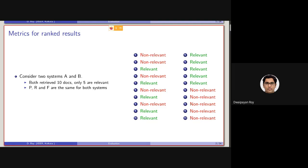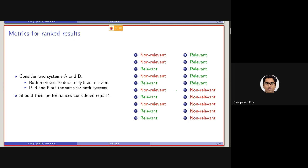Up to this point, we are not at all considering any ranking. Consider two systems A and B. System A is retrieving this set of documents, B is retrieving this set of documents. Retrieval model A is actually retrieving non-relevant documents at the top. Still, if we measured precision, recall, or F-score, you will find that these scores for both retrieval models will be the same — because precision, recall, and F-measure are not considering any ranking. But should their performance be the same? No. We should be saying that B is better than A.